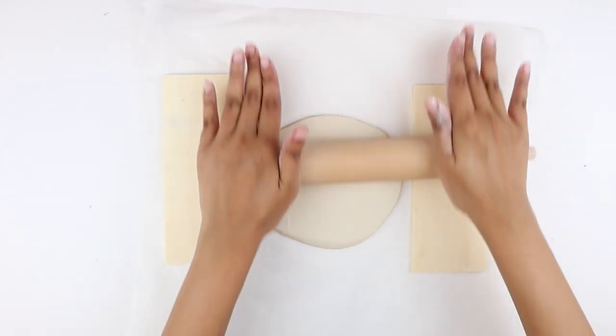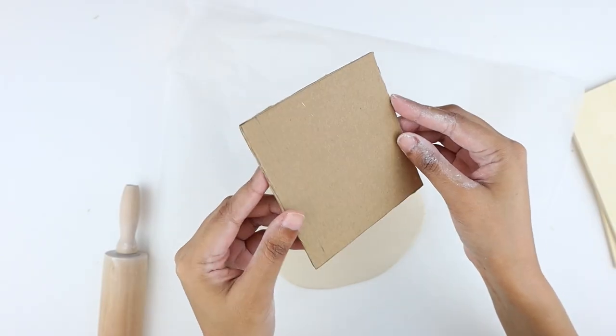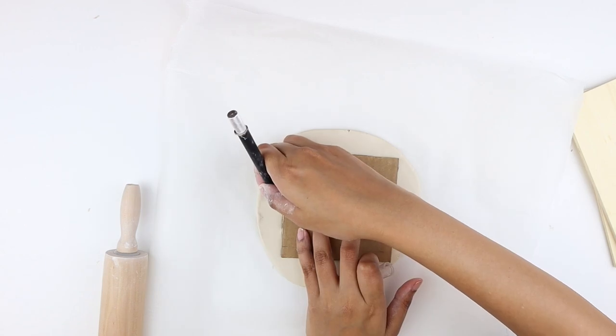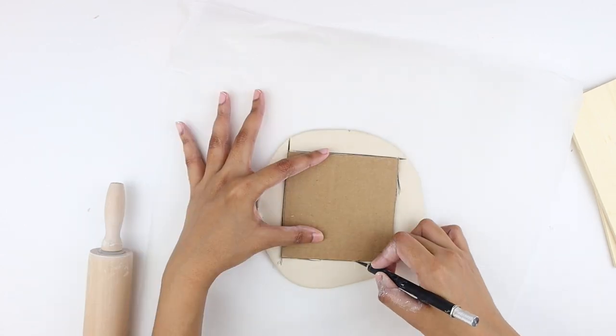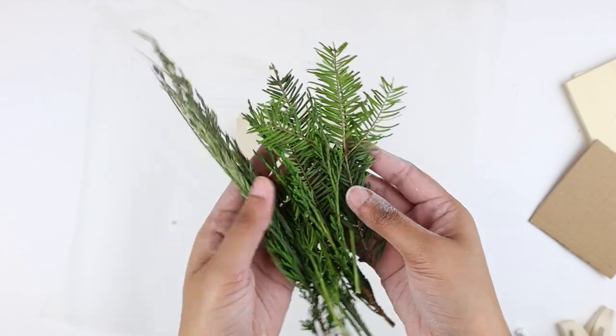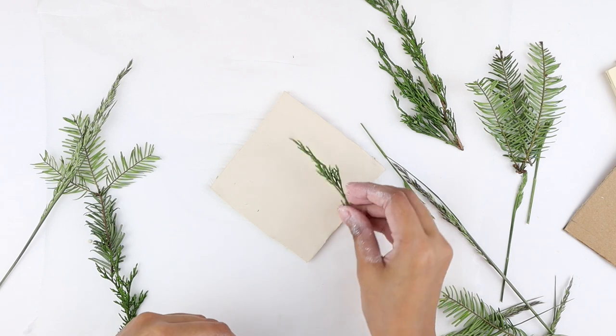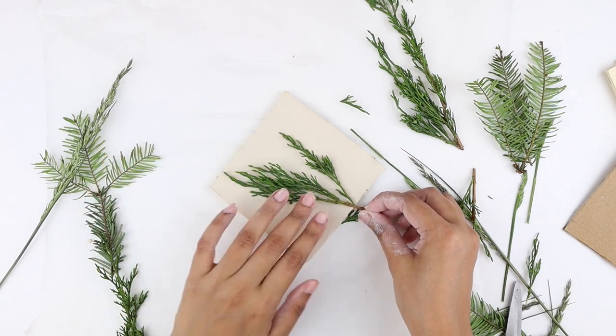I kept rolling it until the piece was around a quarter inch thick. Then I grabbed the template which I cut before and placed it on the clay and cut it out all the way, following the edges. I took out the excess and next grabbed these greeneries to imprint on the clay. You can totally arrange them whichever way you like. For the first piece, I grabbed a small leaf and right next to it I placed a large leaf.